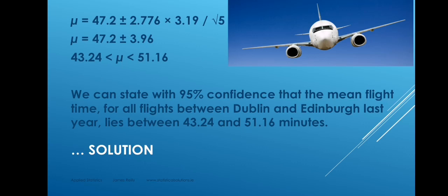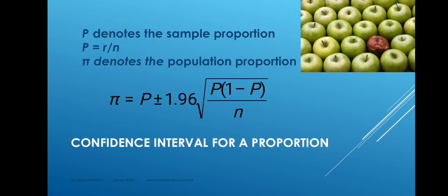So there's our confidence interval statement — that's how we calculate the confidence interval for a population mean. We're going to move on now to look at confidence intervals for a population proportion. When we take a sample from a population to find out the population proportion, we use P to denote the sample proportion. P is R divided by N, where N is the sample size and R is the number of units in the sample which possess the attribute of interest.